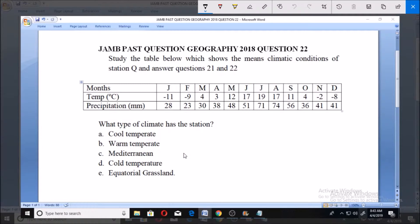And you can see that we have lots below minus three, like minus eight, minus nine, minus eleven. So we have such temperatures for cold temperate.